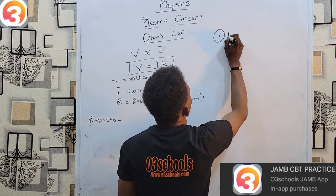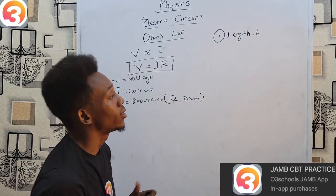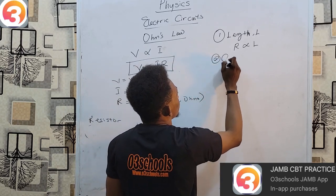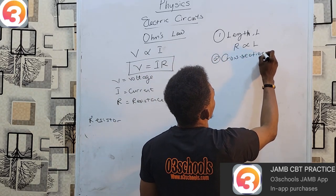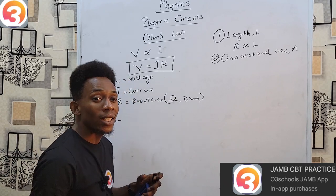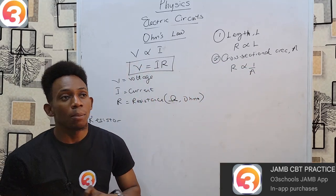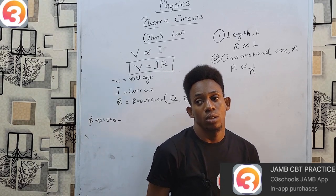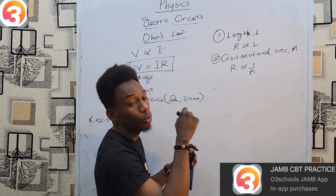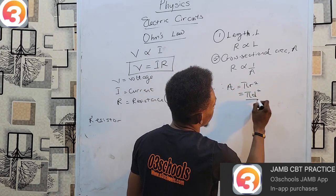The first factor is the length of the resistor: the greater the length, the greater the resistance — a direct relationship. The second factor is the cross-sectional area: this is an inverse relationship, meaning the bigger the area the smaller the resistance, and vice versa. Most wires come in cylindrical form, so their cross-section is circular and the area is given by πr² or πd²/4.